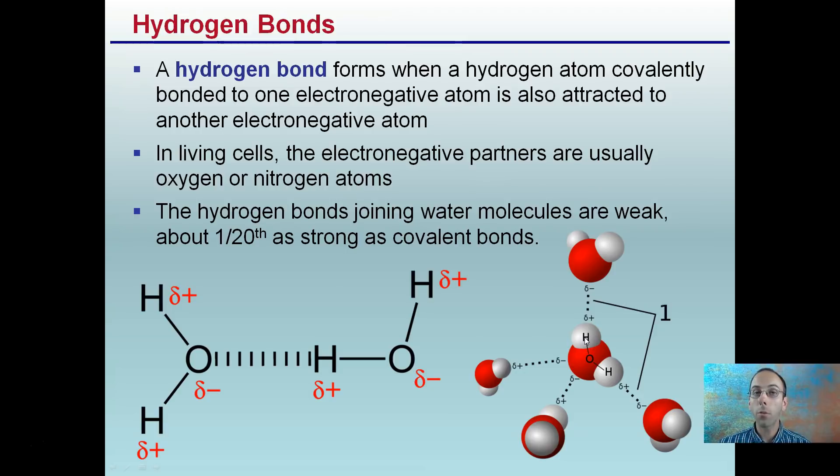Hydrogen bonds. A hydrogen bond forms when hydrogen atoms covalently bond to one electronegative atom. It's also attracted to another electronegative atom. In living cells, electronegative patterns are usually oxygen or nitrogen atoms. The hydrogen bonding that joins water molecules are weak, so only about one-twentieth as strong as a covalent bond. So while they are bonds, but they're very weak bonds. We see that represented with these lines here. We have a weak negative, a weak positive. As a result, our hydrogens are going to have this bond form, so we call a hydrogen bond. We represent with the lines, it's pretty easily broken, but it does kind of stick together for a little bit.